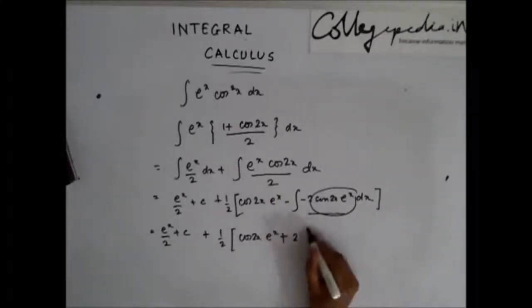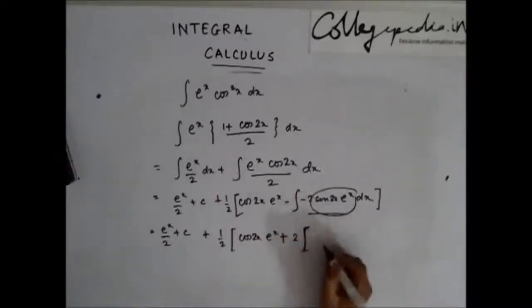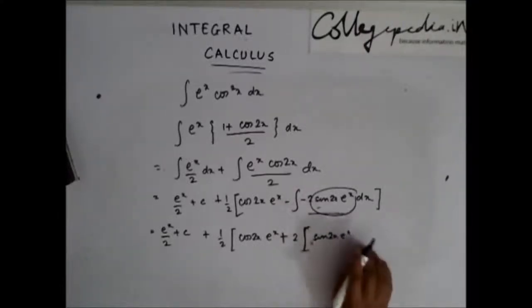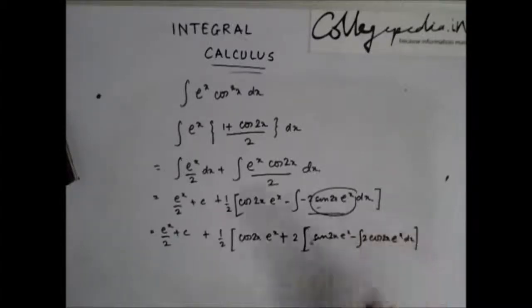You have to integrate sin 2x dx. What will I get? I will take sin 2x as my first function. I will get sin 2x e to the power x minus, I will differentiate sin 2x: I will get cos of 2x e to the power x dx.